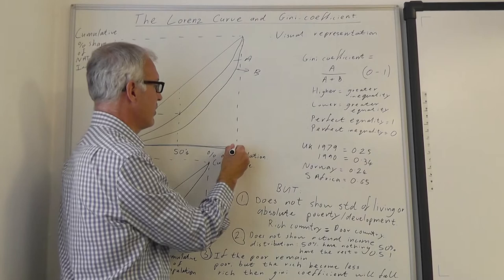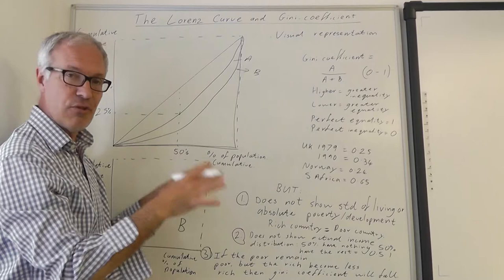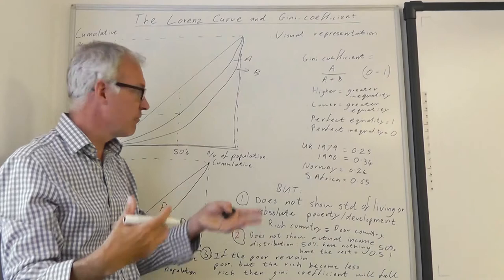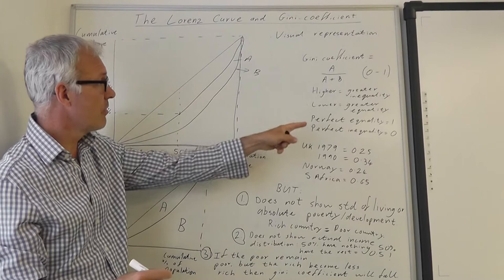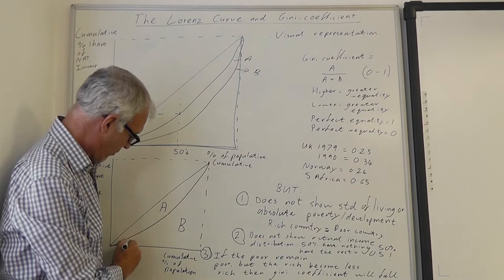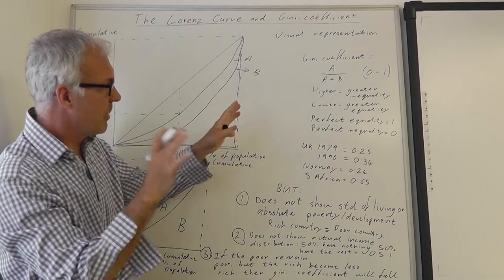If we had perfect inequality, we'd have an inverted L-shaped Lorenz curve like that. Everyone apart from one person would have nothing, and one person would earn everything, all the income, or if we were measuring wealth, all the wealth would be theirs. That would be perfect inequality, which would be 0 on the Gini coefficient, because the Lorenz curve would be completely flat until that point there.